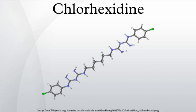As an antiseptic, at physiologic pH, chlorhexidine's salts dissociate and release the positively charged chlorhexidine cation. The bactericidal effect is a result of the binding of this cationic molecule to negatively charged bacterial cell walls. At low concentrations this results in a bacteriostatic effect, while at high concentrations membrane disruption results in cell death.